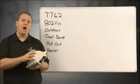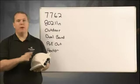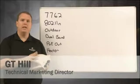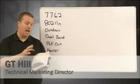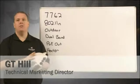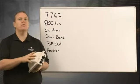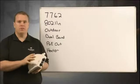The 7762 is the outdoor version of our very popular and powerful 7962. It's a dual band 802.11n access point that is IP67 rated for outdoors. Let's take a look at some details of this access point and see the features that it has.